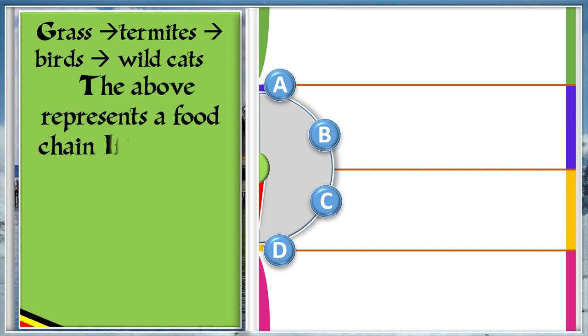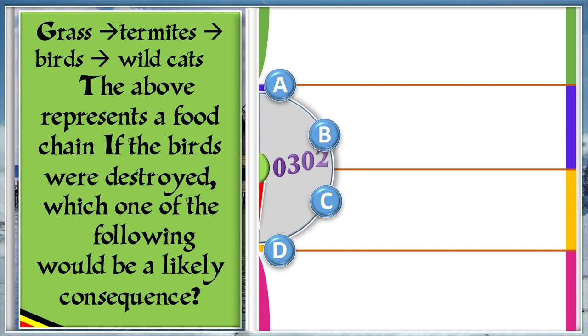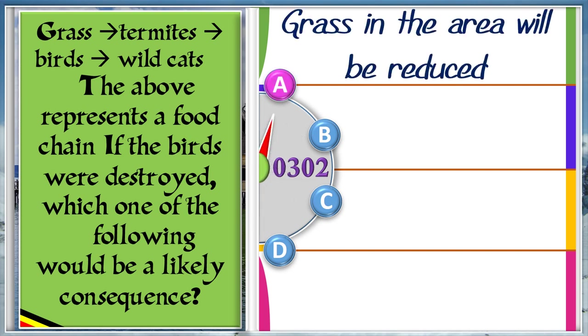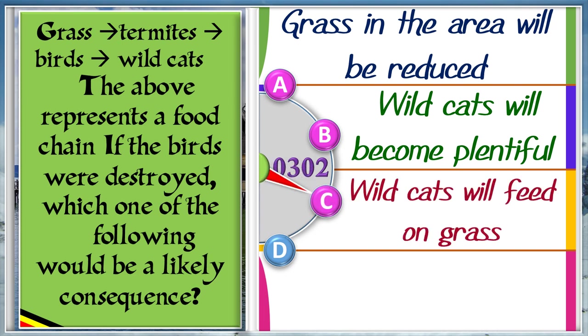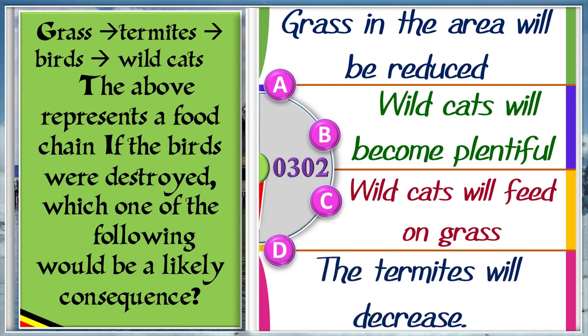Grass to termites to birds to wild cats. The bar represents a food chain. If the birds were destroyed, which one of the following would be a likely consequence? A: Grass in the area will be reduced. B: Wild cats will become plentiful. C: Wild cats will feed on grass. D: The termites will decrease. The answer is A, grass in the area will be reduced.